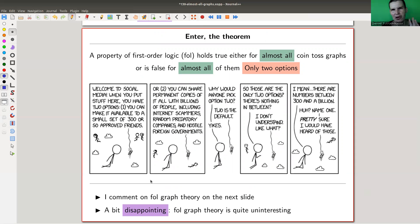A very interesting type of statement. A property in first-order logic holds true for almost all coin toss graphs, or it's false for almost all of them. Any property in first-order logic is almost always true or almost always false. There are only two options, and there's nothing in between. Very similar to the XKCD comic here - either 300 or a billion, nothing in between. That's exactly what this theorem says.